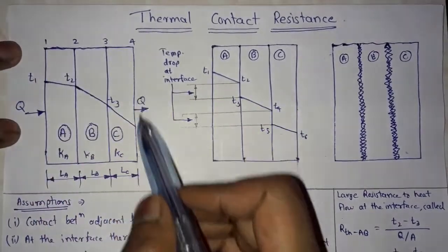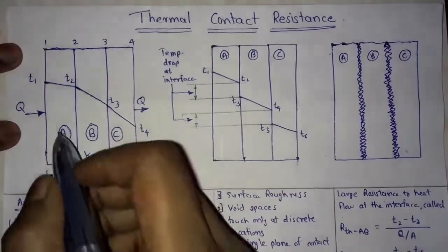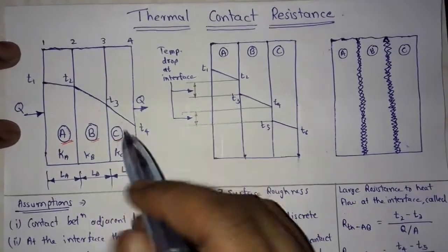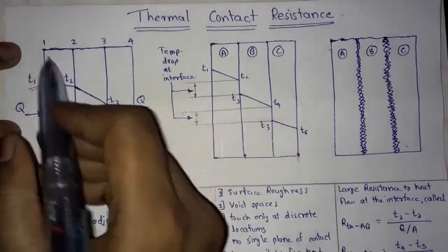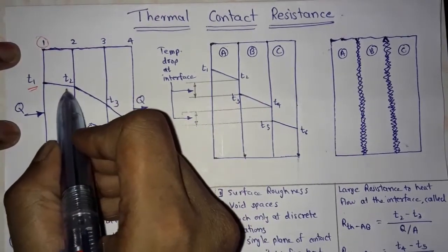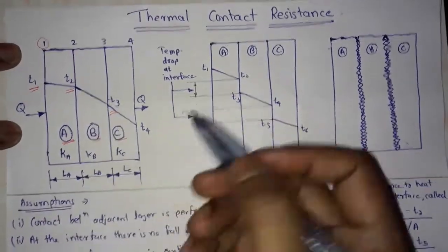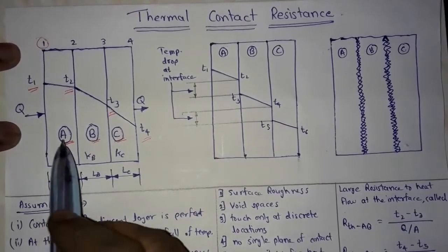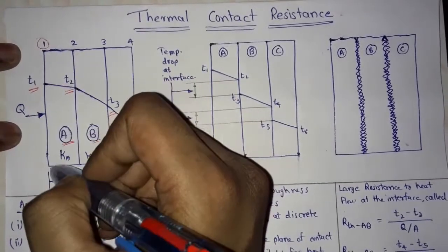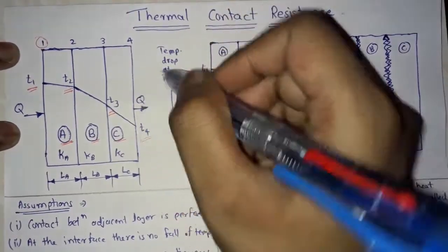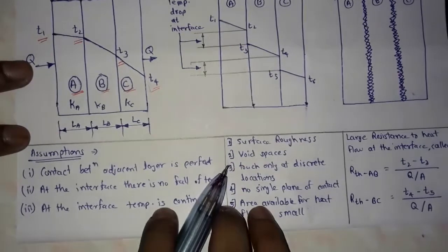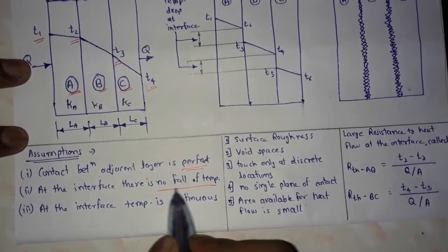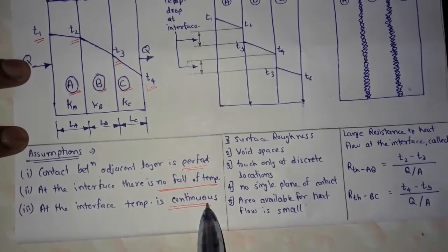Here is a composite wall consisting of wall A, wall B, and wall C. This wall has temperatures T1, T2, T3, and T4 at each interface. Heat is transferred from one location to the fourth location. In this case, we have assumed contact between adjacent layers is perfect — at the interface, there is no fall of temperature and temperature is continuous.